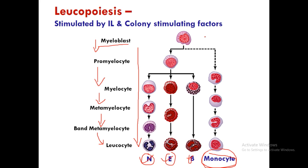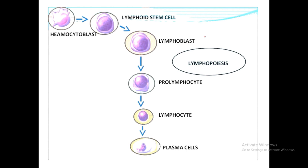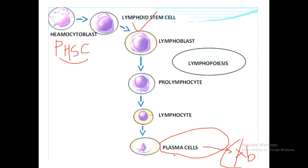Lymphopoiesis is the development and maturation of lymphocytes specifically. The pluripotent hemopoietic stem cell (PHSC or hemocytoblast) converts to lymphoid stem cell → lymphoblast → prolymphocyte → lymphocyte. Lymphocytes then convert to plasma cells, which release different types of immunoglobulins (antibodies).